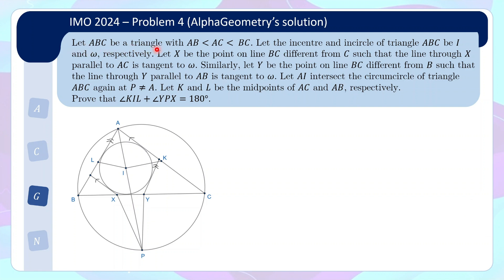Let ABC be a triangle with AB less than AC less than BC, and let the incenter and incircle of the triangle be I and omega respectively. Let X be the point on the line BC different from C such that the line through X parallel to AC is tangent to omega. So here is X and here is the line parallel to AC and tangent. Similarly, let Y be the point on line BC different from B such that the line through Y parallel to AB is tangent to omega. So here is Y, this line is parallel to AB and is tangent to omega.